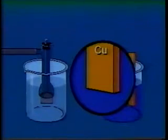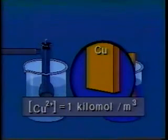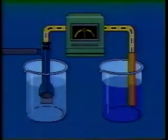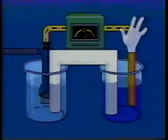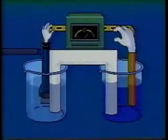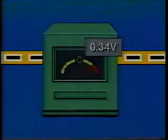Take for example a half-cell in which a copper electrode is immersed in a solution containing a standard concentration of copper ions. A voltmeter connected to this cell will read 0.34 volts. Electrons flow from the hydrogen to the copper half-cell, which means the copper ions have a greater attraction for electrons than hydrogen ions. We measure this greater attraction by comparing the voltage to the hydrogen standard — simple to do because the standard is zero.